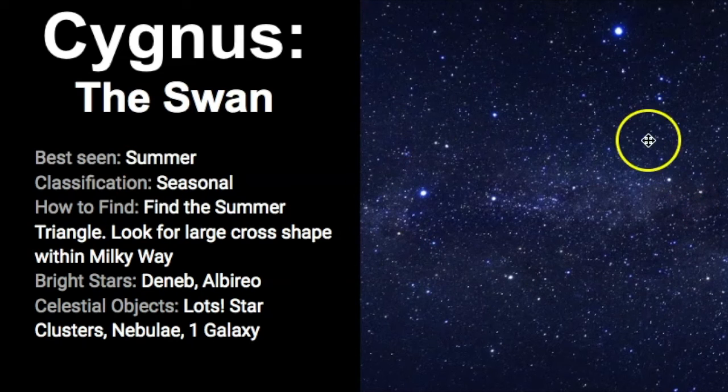There are lots of celestial objects that sit in the boundaries of Cygnus because the Milky Way is seated behind it. So there's lots of star clusters, nebulae, there's a galaxy, and even a black hole which was the first one ever detected.